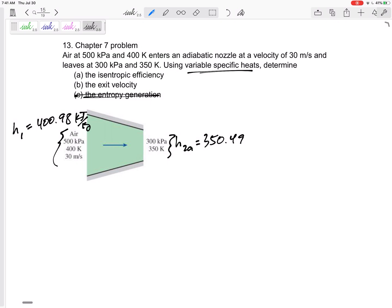We won't do entropy generation. The isentropic efficiency for nozzles is v2 actual squared over v2 isentropic squared, and I don't think I have either of those velocities just yet. Maybe I can get them - those velocities are in the conservation of energy equation.